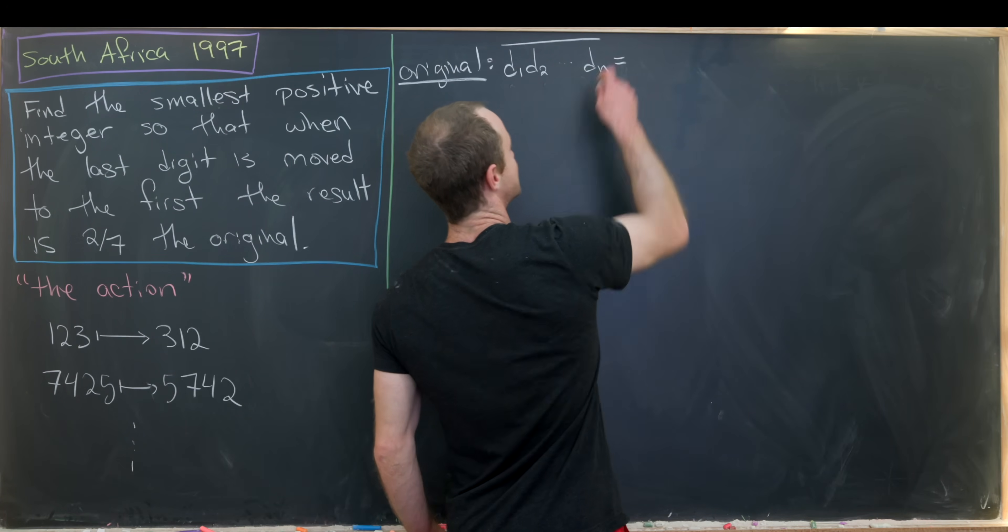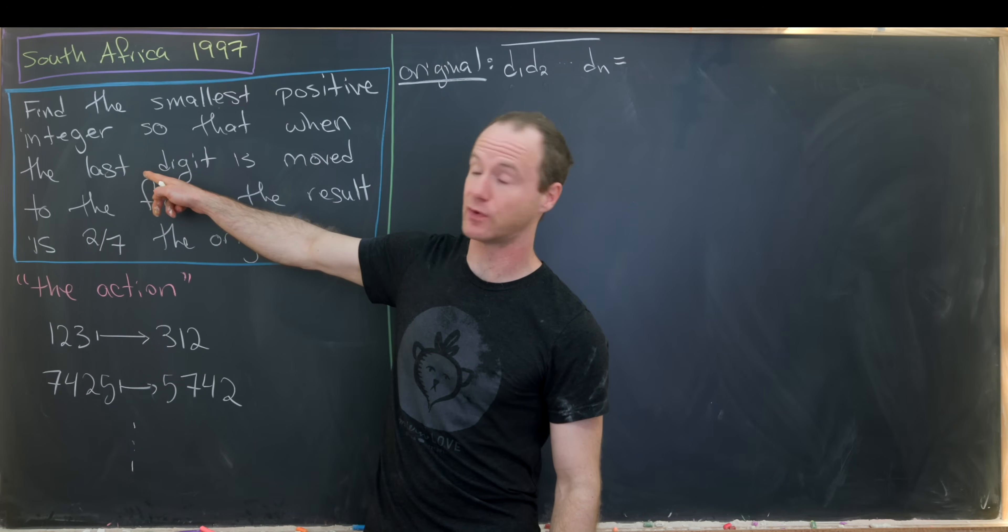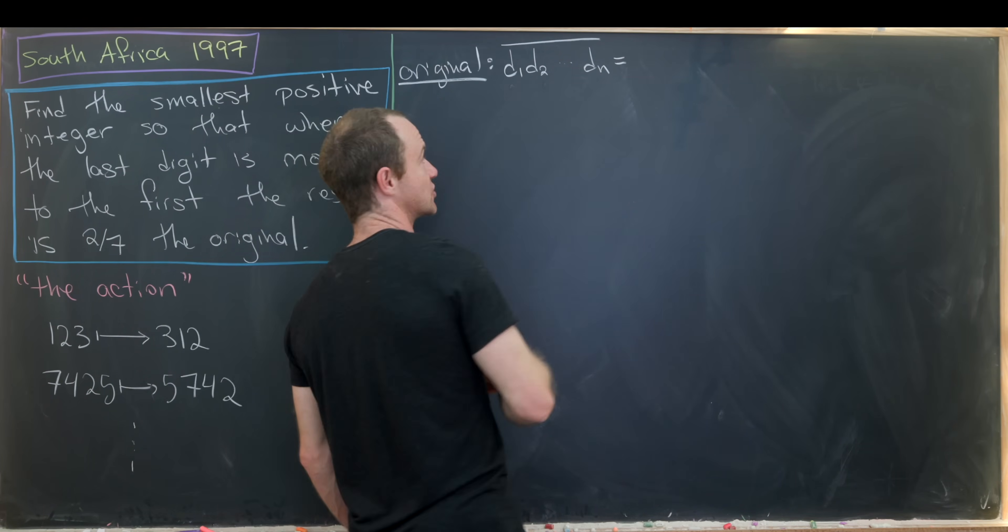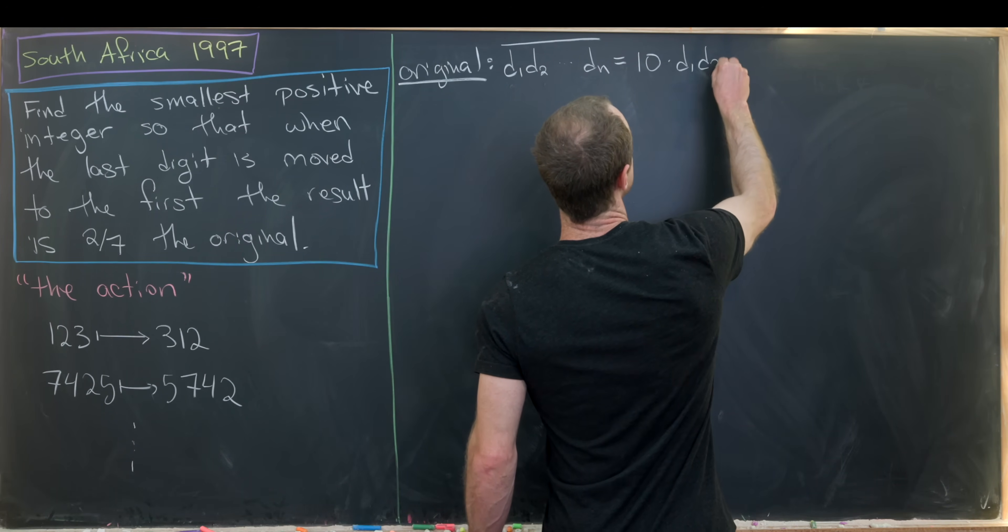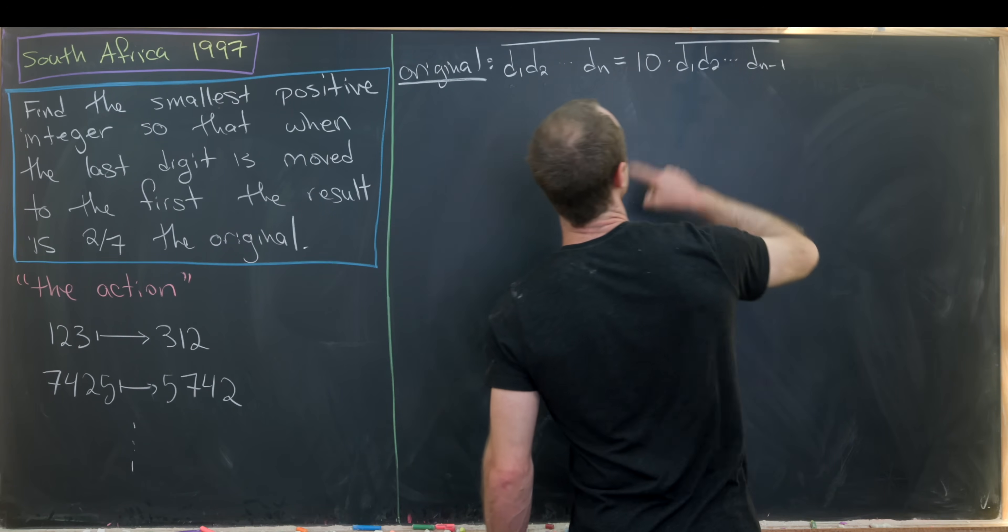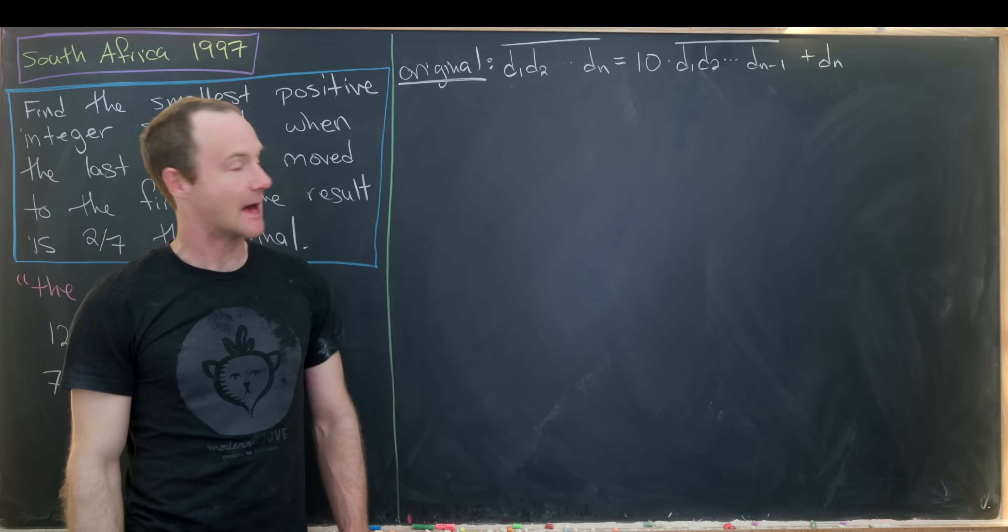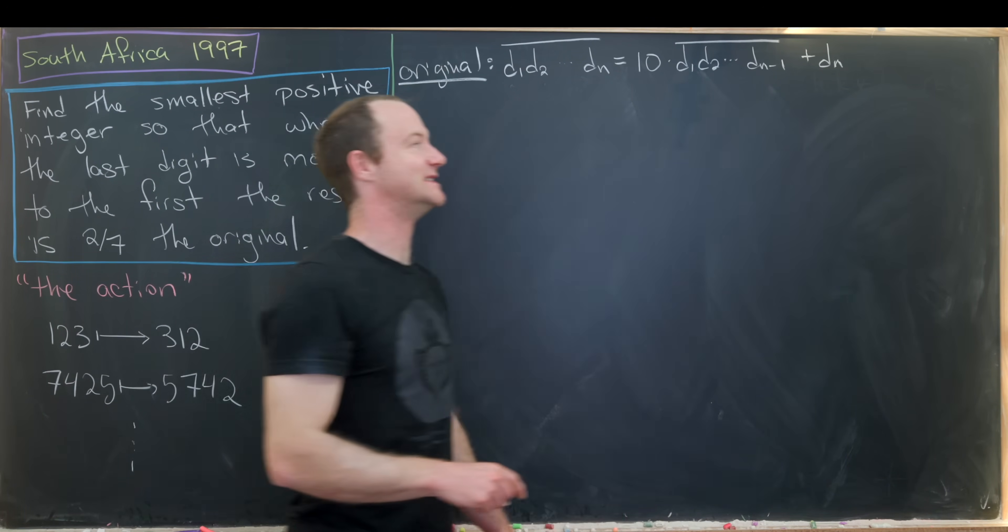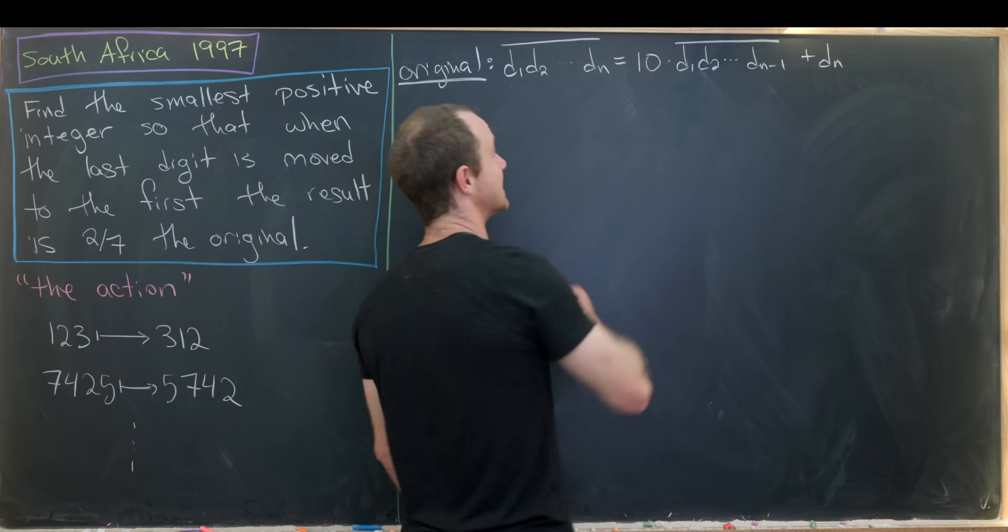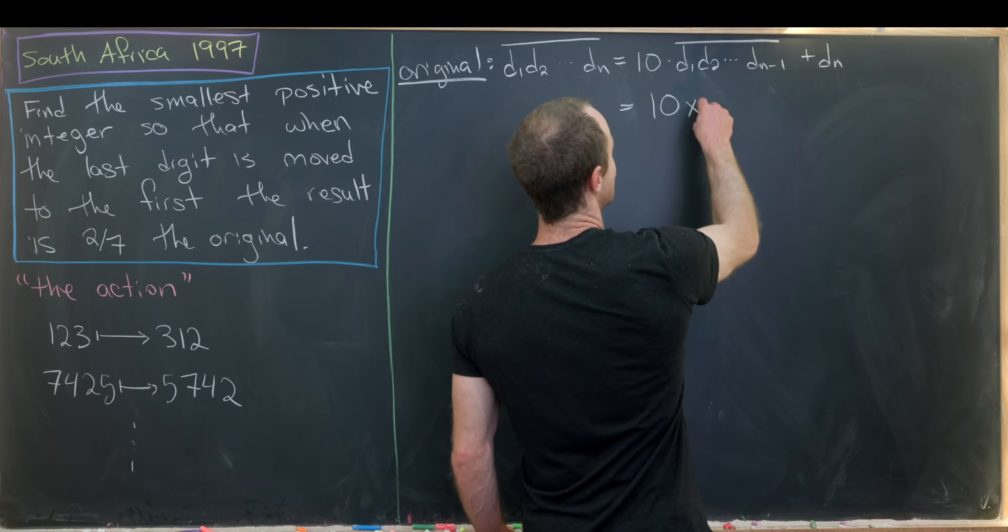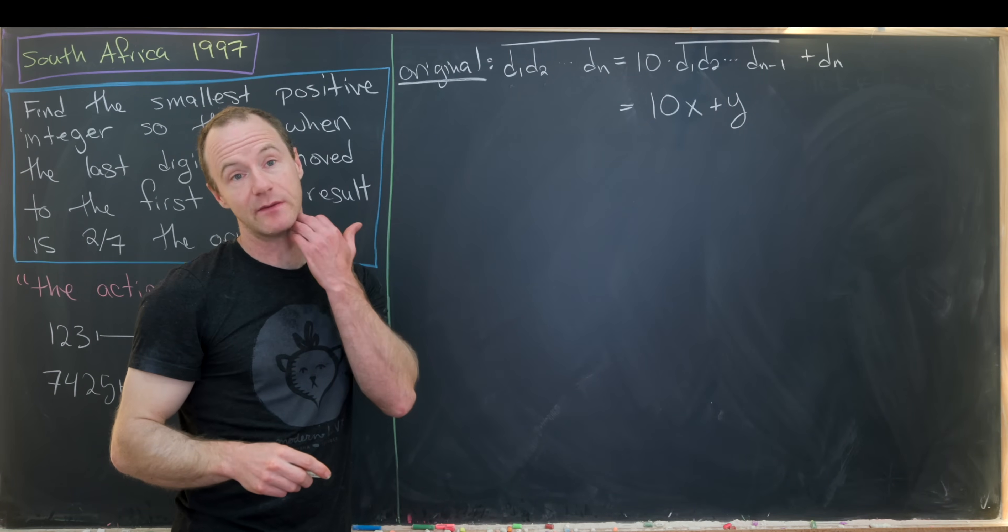Now I'd like to express this where I've pulled the last digit out, because that's what our action does, is it pulls the last digit out, and it puts it in the first position. So in order to do that, I can take this and write it as 10 times d1, d2, all the way up to dn minus one. So that number right there, plus dn. But then maybe since this d1, d2 up to dn minus one is grouped together into one thing, we'll name that something. And we will name that x just to make it easy. So this is equal to 10 times x plus, and I'll call dn y, just to make it in line with our labeling of x here.